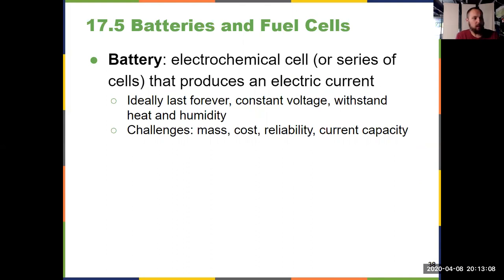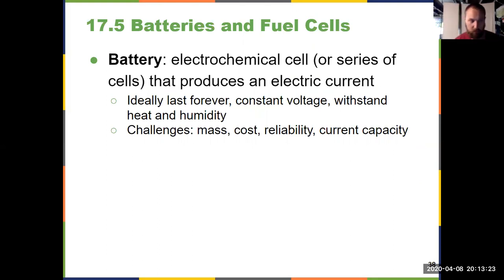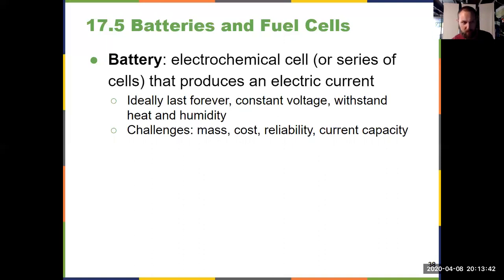Let's think about a couple of different types of batteries, most of which you've probably encountered in everyday life. What is a battery? It's either a single electrochemical cell, or nowadays a series of electrochemical cells that gives us an electric current. It has to have a positive cell potential, be able to do work with the electrons that are produced. A perfect battery would last forever, give you the same voltage throughout its entire life, and hold up to heat and humidity.